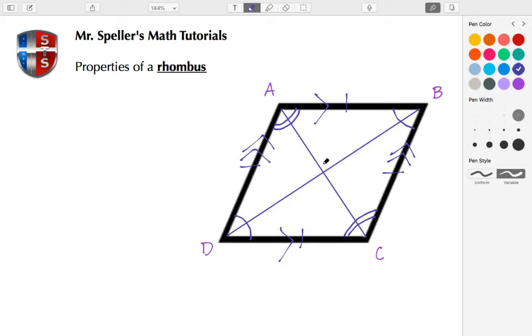These diagonals are perpendicular bisectors, so that means where they intersect we have a 90 degree angle. And we also know that the word bisect means to cut in half, so these two parts are congruent.